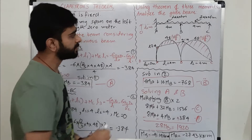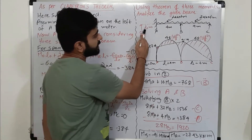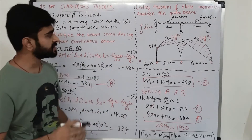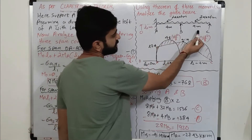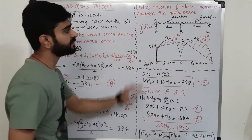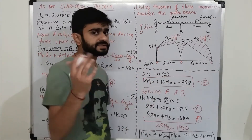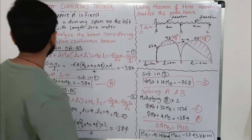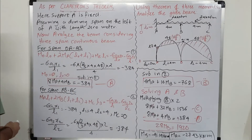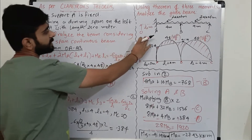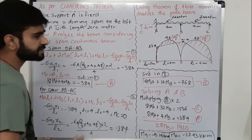When we have a two-span continuous beam with one support fixed, we assume a dummy span on the left of support A with length zero meters. The support is O, and L₀ equals zero because it does not exist. After assuming this dummy span, the second span will be 4 meters and the third span will be 4 meters, with the second span carrying a uniformly distributed load of 24 kilonewtons per meter.